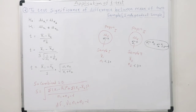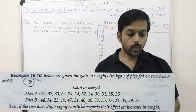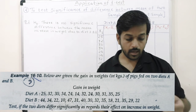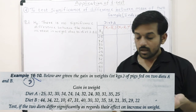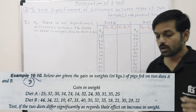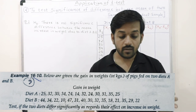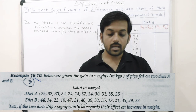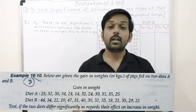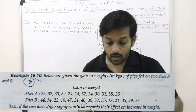Let's see one question. Below are given the gain in weight on two diets A and B. We are given two different diets A and B with weight gain data. For diet A, there are 12 samples from one population, and for diet B, there are 15 samples from another population. We have to test if the two diets differ significantly as regards their effect on increasing weight.